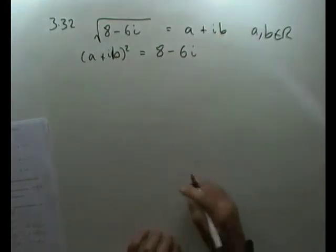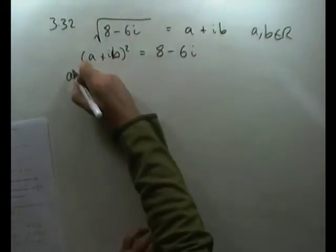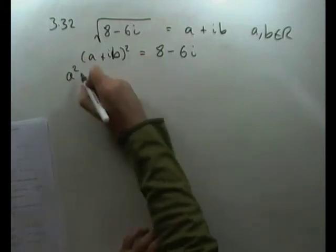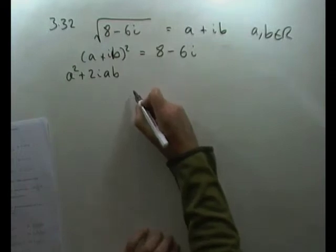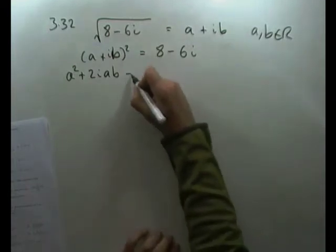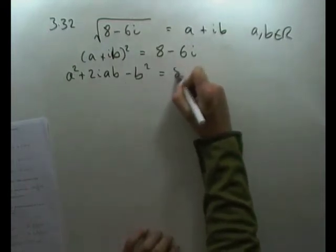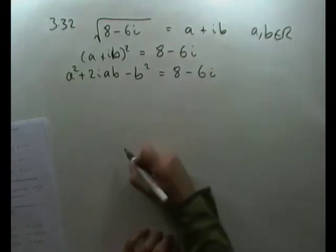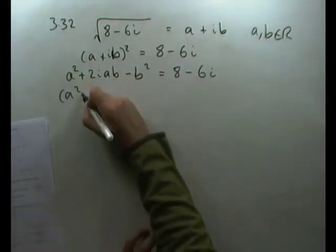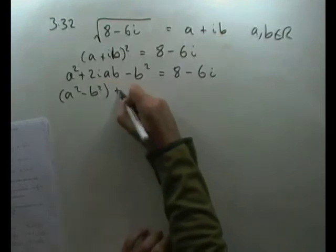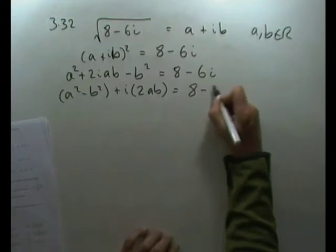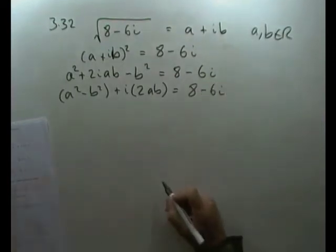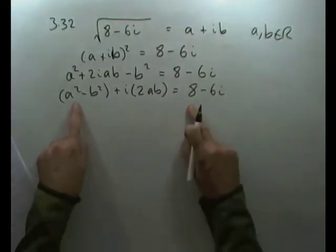Squaring both sides: a² + 2iab + i²b² = 8 - 6i. Since i² is negative 1, this becomes a² + 2iab - b² = 8 - 6i. Arranging parts together: a² - b² + i(2ab) = 8 - 6i. Equating the real and imaginary parts.